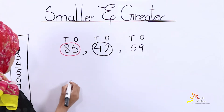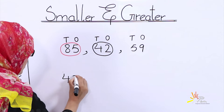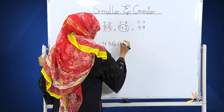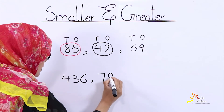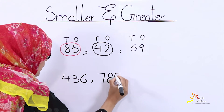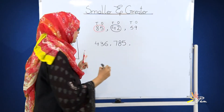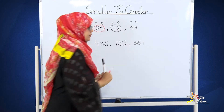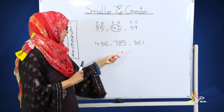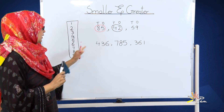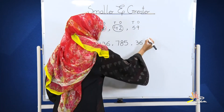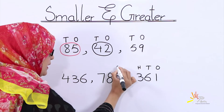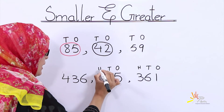Now I have three values here: four, three, six — that is four hundred and thirty-six. Then seven, eight, five — that is seven hundred and eighty-five. One more value: three, six, one — three hundred and sixty-one. Now we will check these values one by one in this table. We will observe the numbers which are standing on the hundreds place — ones, tens and hundreds.